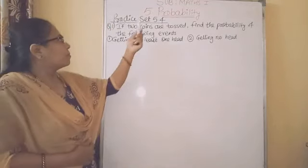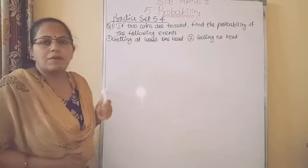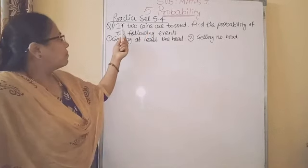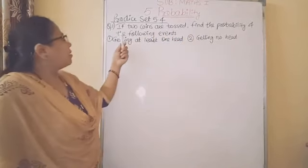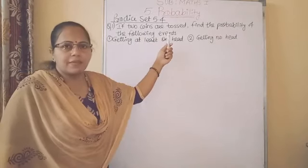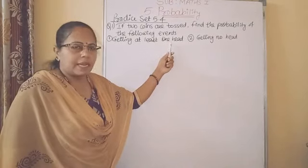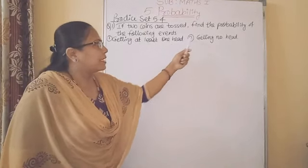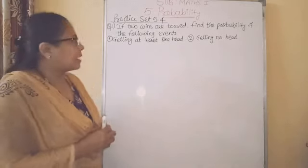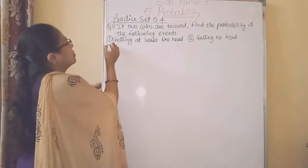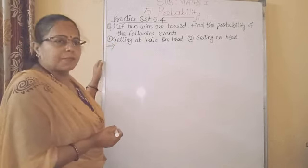Let us solve some examples from practice set 5.4, question number 1. If 2 coins are tossed, find the probability of the following events. There are 2 events: the 1st one is getting at least 1 head, and the 2nd one is getting no head. We will solve the example. Here we will write the experiment first: 2 coins are tossed.